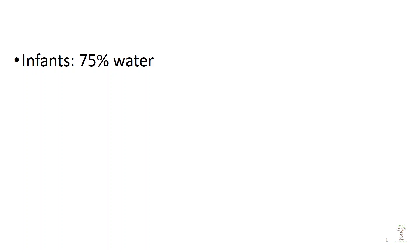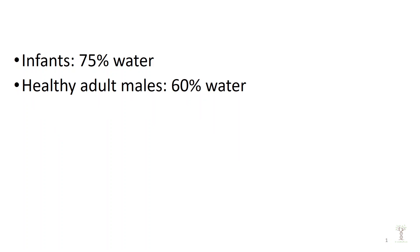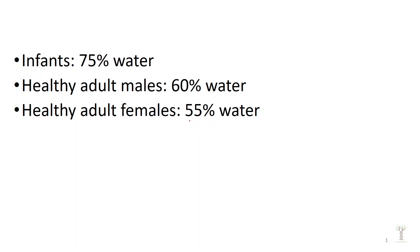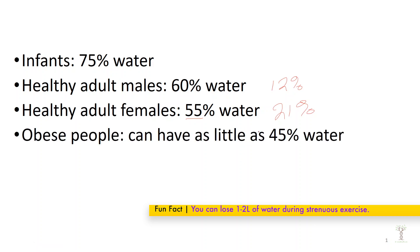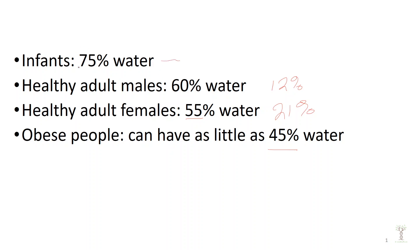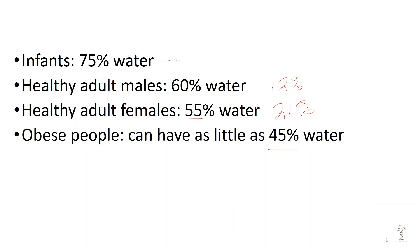How much of our bodies are made of water? Infants are about 75% water, and as we get older that percentage decreases. Healthy adult males are about 60%, and females are a little bit less because they have more body fat - an average healthy male might be 12% body fat while an average healthy female might be 21%. Obese people can have as little as 45% water. As we age, we should remain fairly stable in the 55 to 60% range for most of our adult lives.